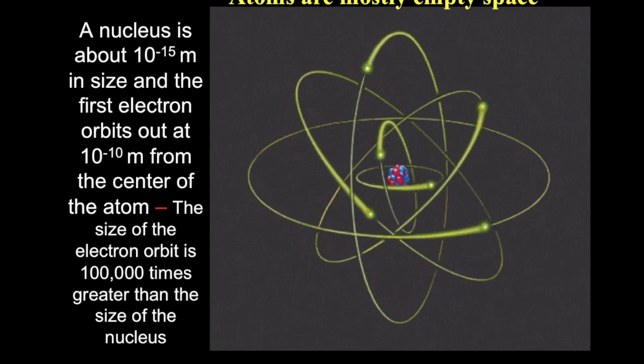But 10 to the minus 10 is only a hundred thousand times bigger than the size of the nucleus itself. It seems like a very small distance when we describe it like this, but the distance between the nucleus and the first electron is actually very large at the subatomic scale.